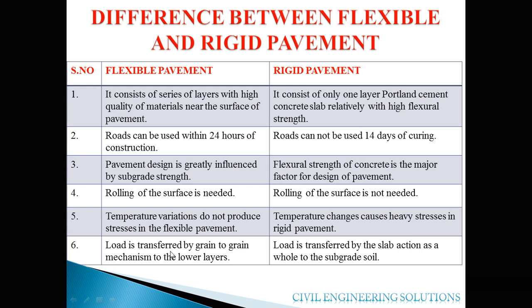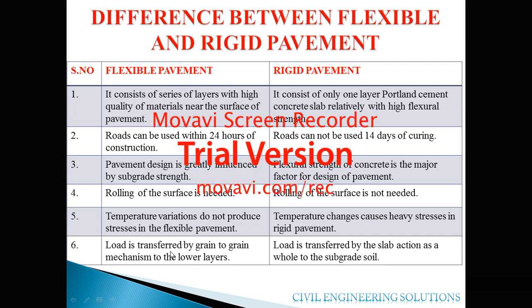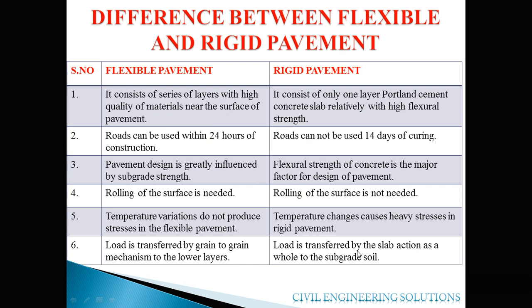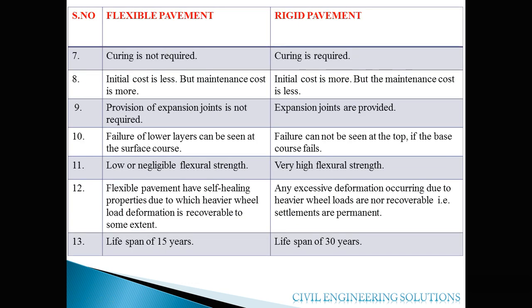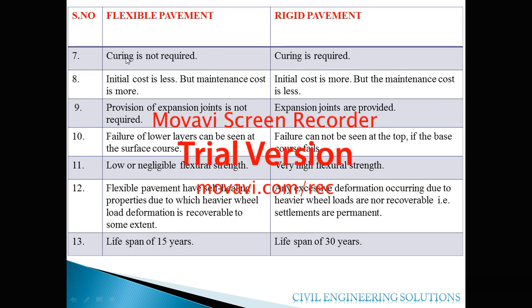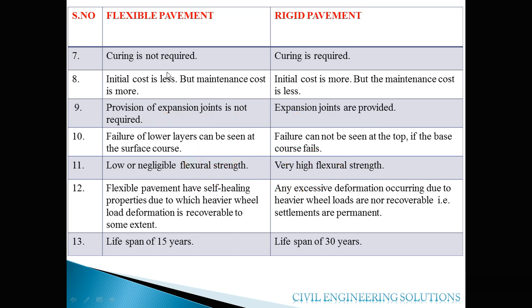Regarding load transfer mechanism: in flexible pavement, the load is transferred from grain to grain through the granular layers down to the lower layers. In rigid pavement, the load is transferred by slab action as a whole to the subgrade, distributing the load over a large area. Curing is not required in flexible pavement, but in rigid pavement, curing is very important and must be done for a minimum of 14 days.